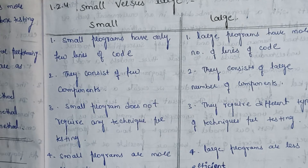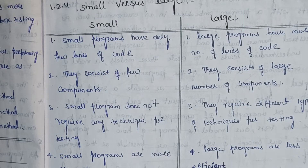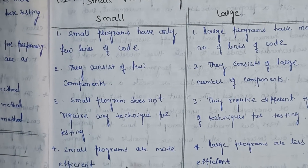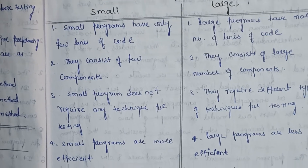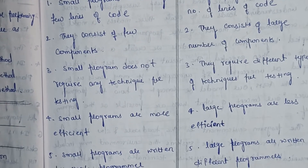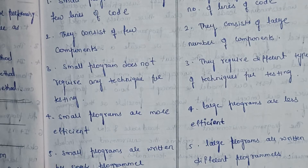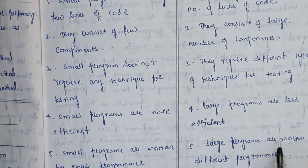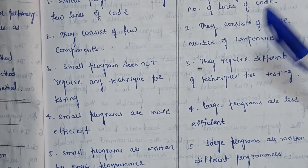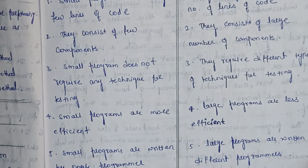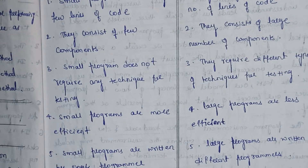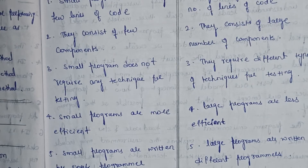If large programs have many different components and there are any mistakes, we need different techniques to identify them. Small programs are more efficient, while large programs are less efficient. Small programs are written by a single programmer, whereas large programs are written by different programmers. So these are the main four types of dichotomies in software testing.